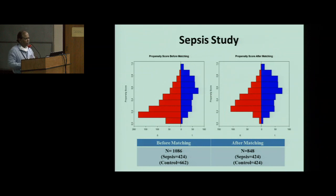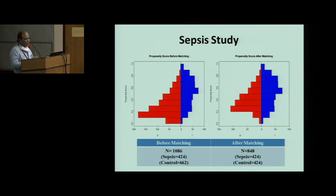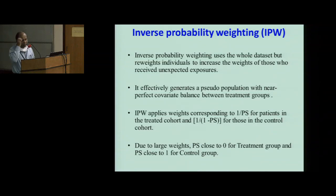For the sepsis study — sepsis versus no sepsis, with mortality as the outcome — the matching worked very well on the lower side of the score, where the no-sepsis group matched with the sepsis group, but it has not changed anything on the higher side of the score. This raises a question about whether matching really worked for the higher side of the score. The inverse probability weighting (IPW) method has a very strong mathematical background — this is the method James Heckman did a lot of work on.